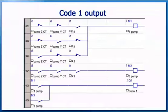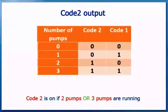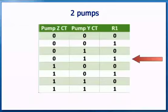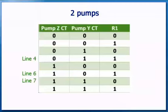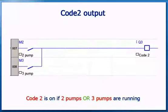We can now put it all together to show the complete program for turning on the Code 1 output. The next section to develop is the Code 2 output. Code 2 comes on if there are two pumps or three pumps running. We need an internal relay for two pumps. Here is the truth table showing all pump combinations — identify which ones occur for two pumps running. Go ahead and produce the program for the two pumps relay, then combine the two pumps and three pumps relays to turn on the Code 2 output.